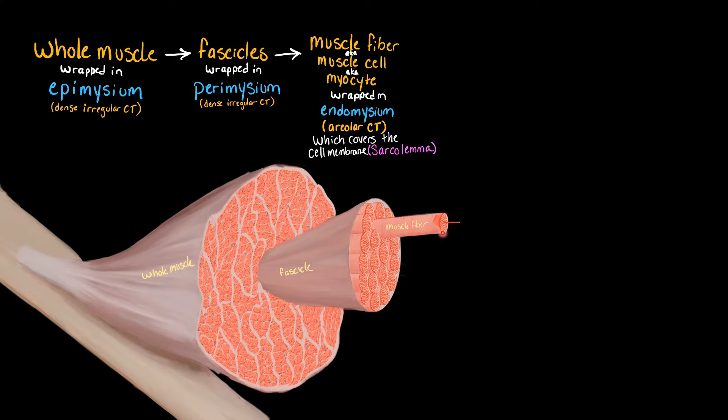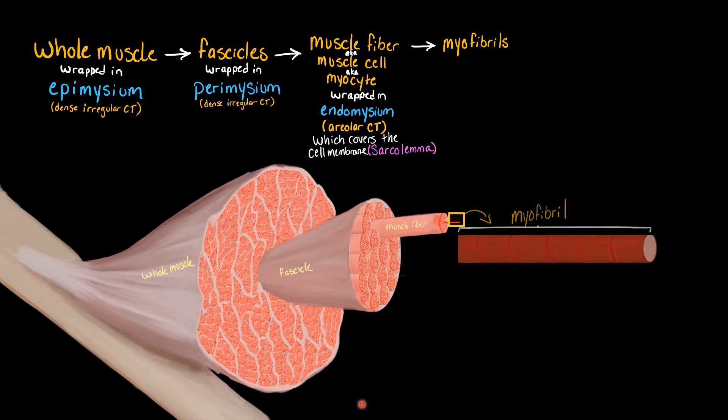And then in every muscle fiber, we once again have even more, even smaller rods. Those rods are the myofibrils. Now, because we are now below the cellular level, we no longer have layers of connective tissue because you don't have layers of connective tissue inside of a cell.